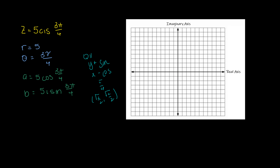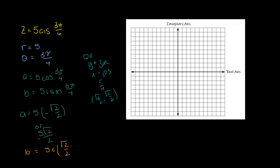So a is going to equal 5 times cosine — and in quadrant two cosines are negative — giving us negative 5√2/2. For b, sine in quadrant two is positive, so b equals 5 times √2/2 · i, which is 5√2/2 · i.